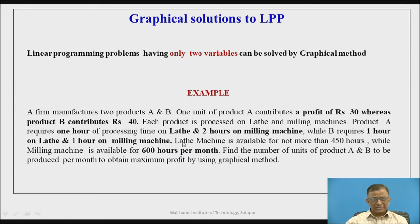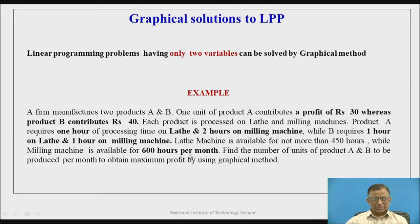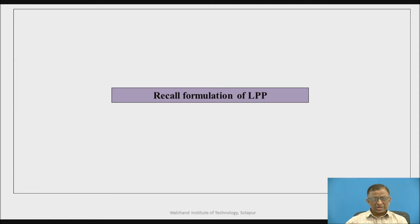These resources — the lathe machine and milling machine — have limited availability. Per month, the lathe machine capacity available is 450 hours, whereas the milling machine capacity available is 600 hours per month. By utilizing these limited resources, we want to know the number of units of product A and B to be produced per month so that the profit is maximum. This is the objective, and that is why we convert the problem into a linear programming model.